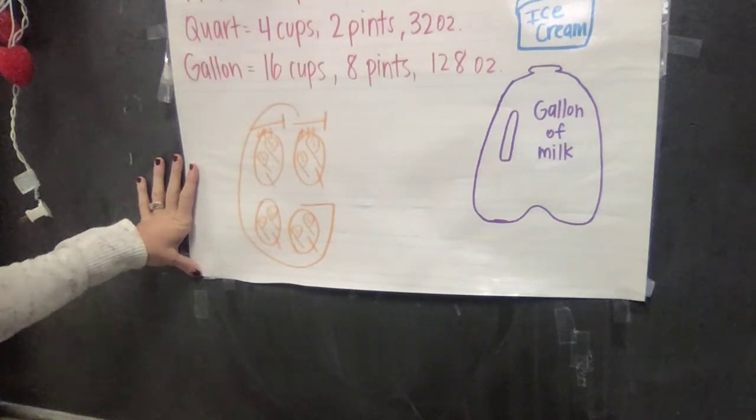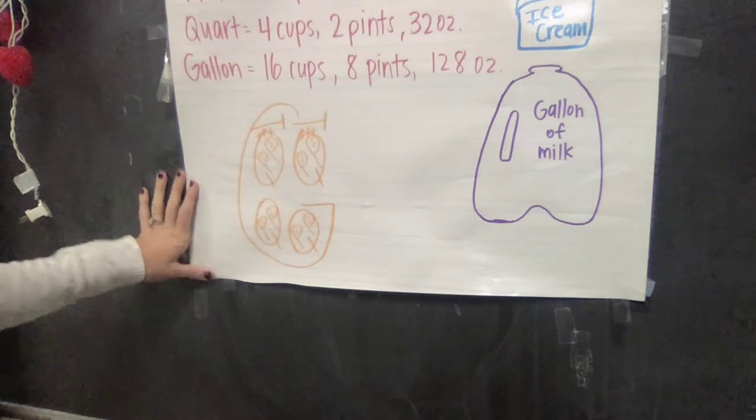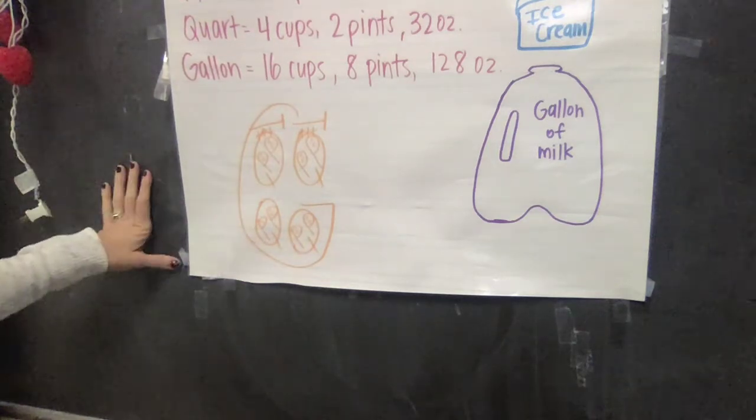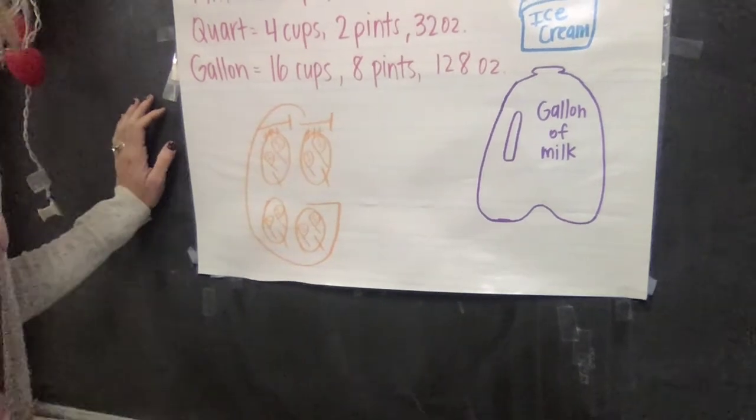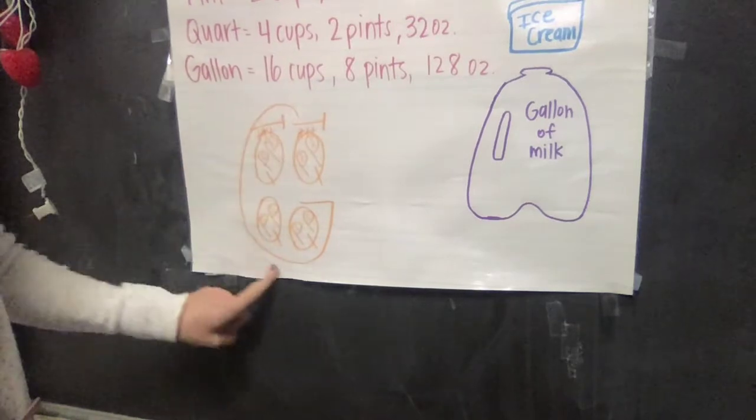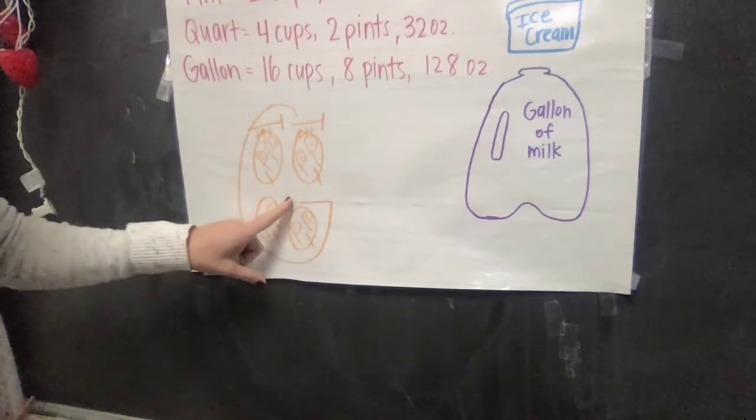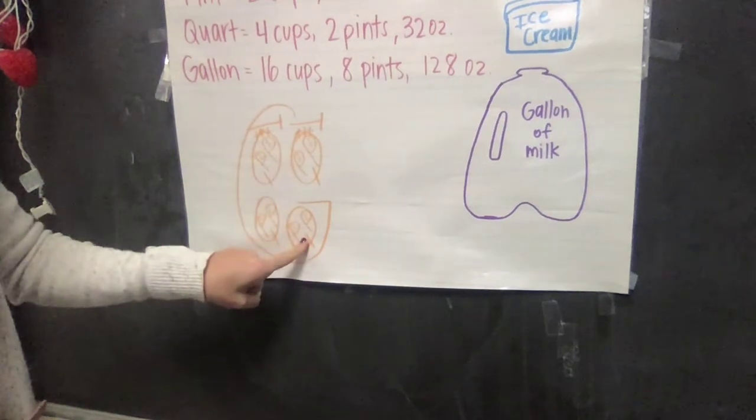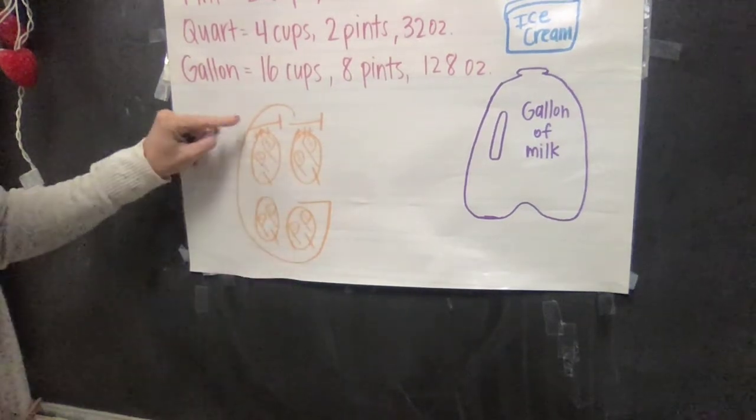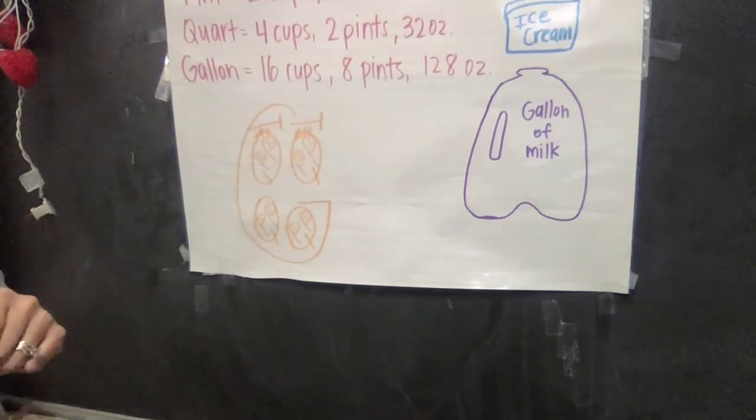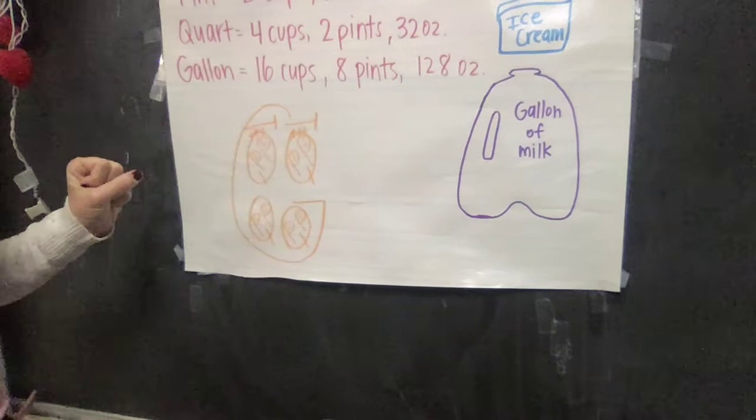Just like our customary units of length, we no longer have to memorize this, but it is very helpful to know automatically how many are in each one. So to help with this we draw a big G, and inside of our gallon we have four quarts. I give mine some tablespoon eyebrows and some teaspoon eyelashes to help me remember that there are three tablespoons and one teaspoon.